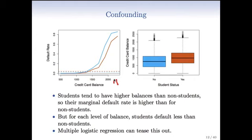Here's a picture where we see credit card balance and the default rate on the vertical axis. Student status is shown in brown (yes) and blue (no). Students tend to have higher balances than non-students, so the marginal default rate is higher for students.